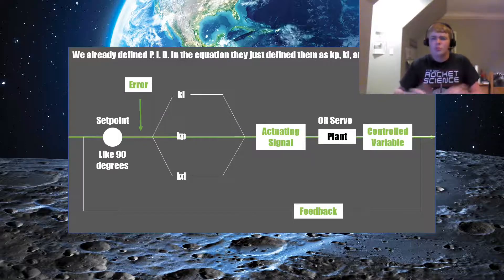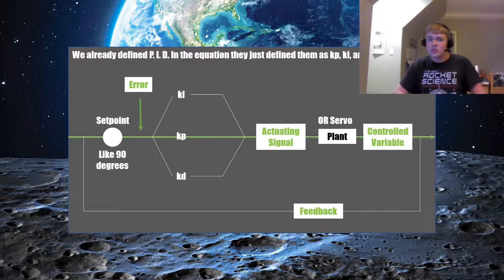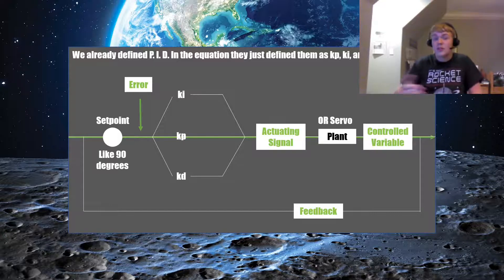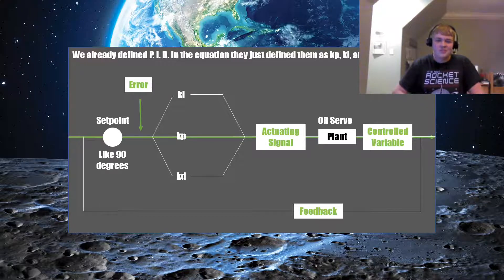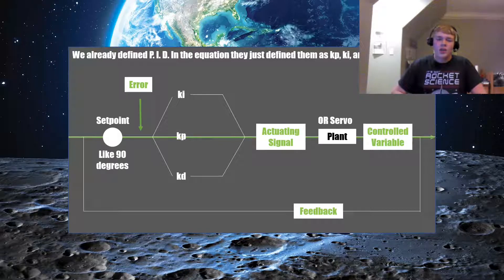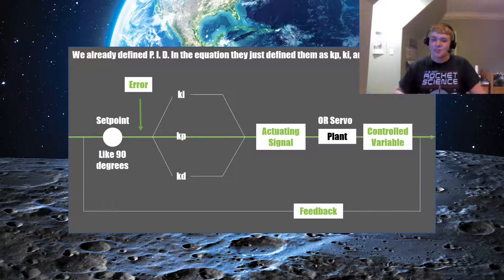I mean, there are multiple variables. There's wind changes. There's offset balance. Just imperfections in the engine. The list goes on. But, that is PID for, that is extremely broken down and simple.